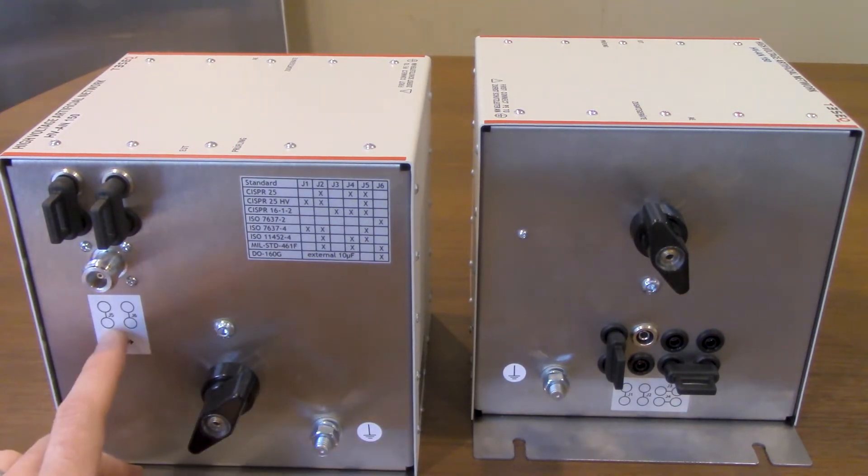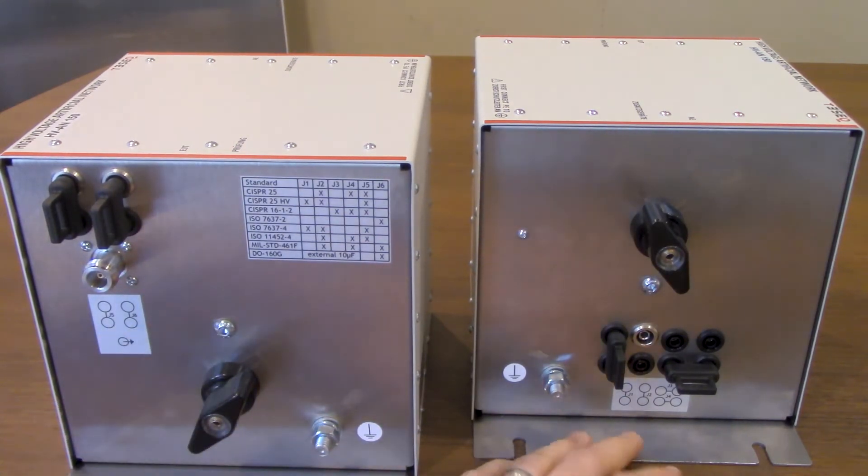They're based upon the labels right here so you'll see J5, J6, over here you'll see J1, J2, J3 and following that, J4.